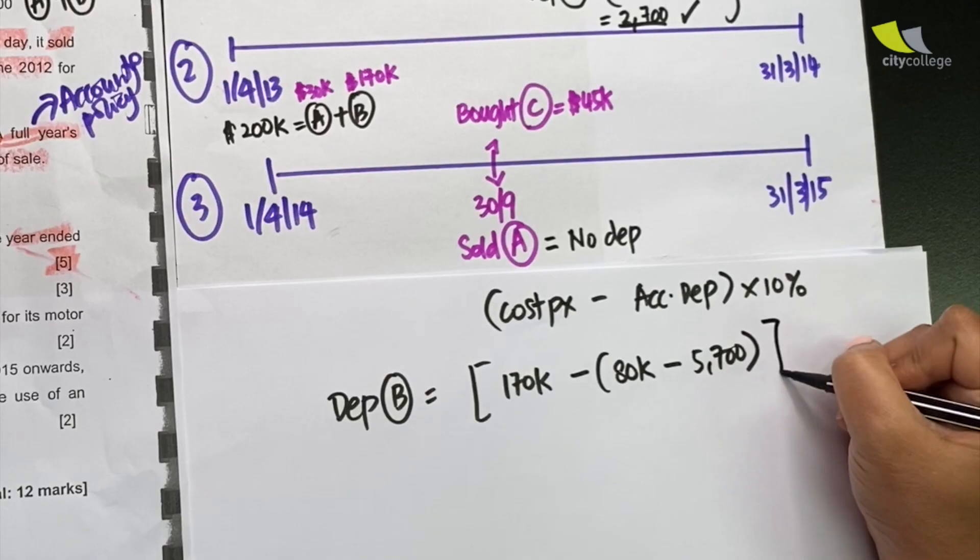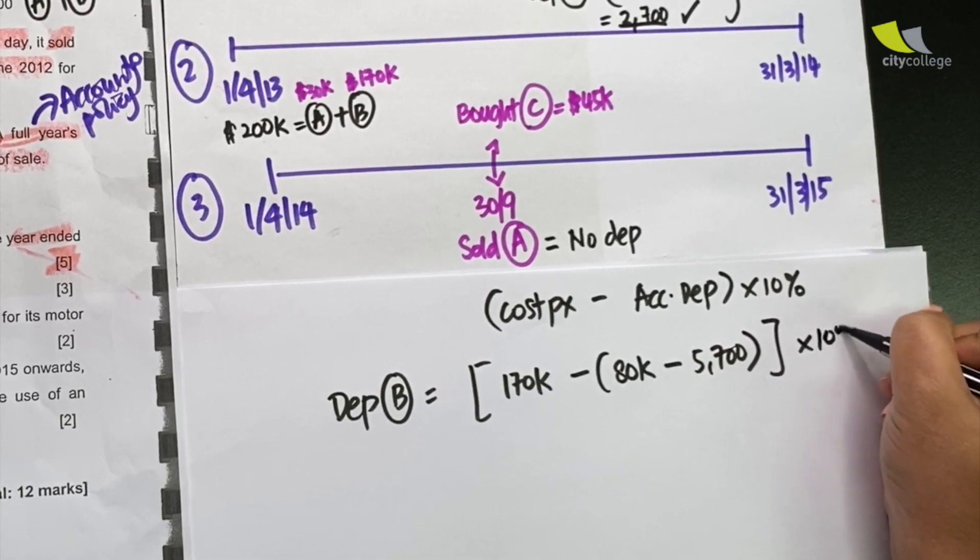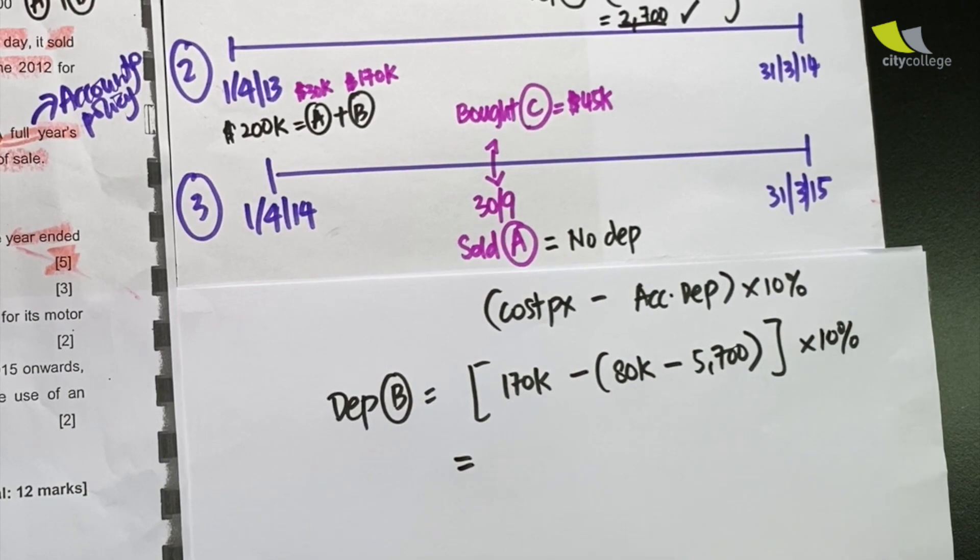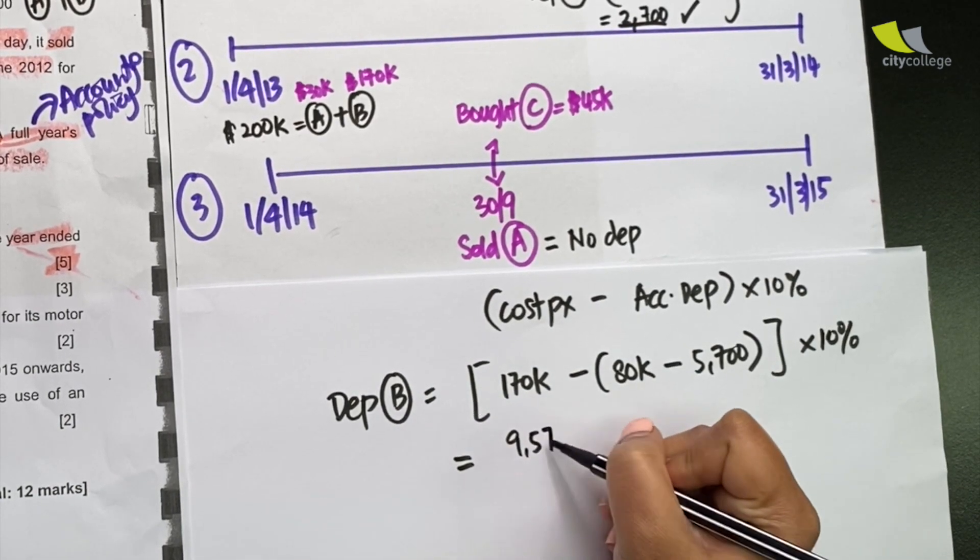Then I proceed to multiply by 10% to get the answer which is $9,570.